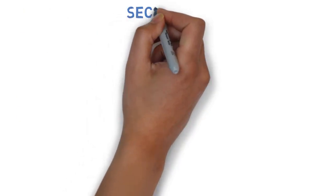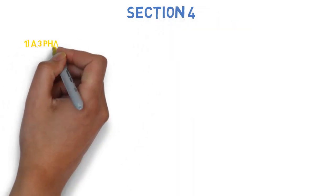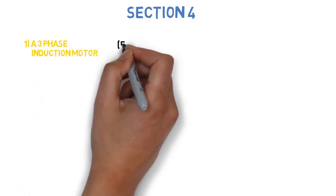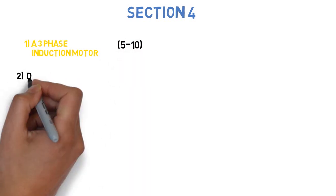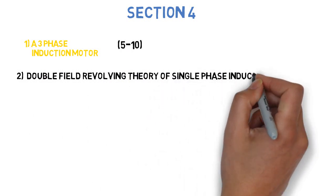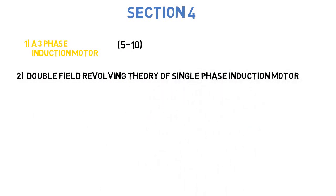Let's go to section four. The first question is state the factors affecting the choice of specific electric and magnetic loadings of a three phase induction motor and justify the statements. This can come for 5-10 marks. Next question is illustrate double field revolving theory of single phase induction motor and hence prove the single phase induction motor is not self starting. This can come for 5-10 marks.